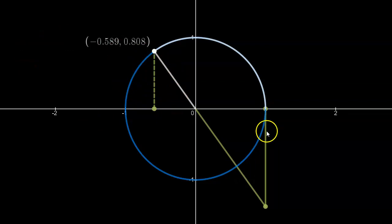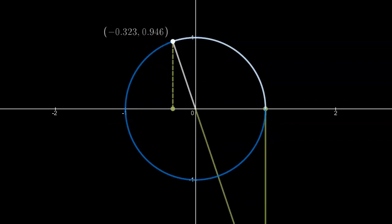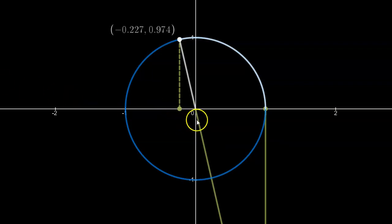So the height of the triangle, quote unquote height, is considered negative. Now, when we first enter quadrant 2, so here we are just first entering quadrant 2, the tangent ratio is a large negative number because the height far exceeds the length of the base in magnitude.